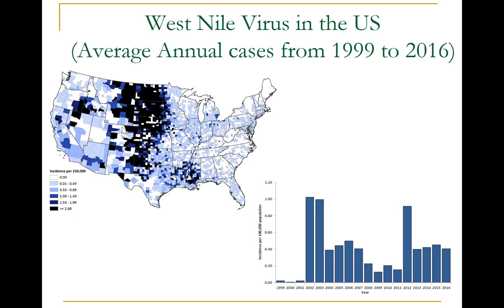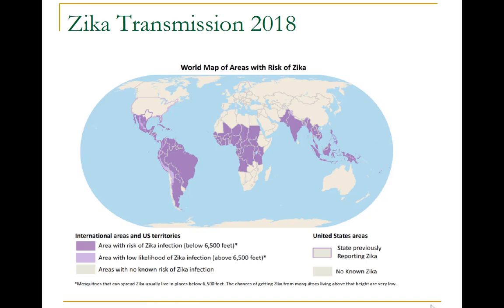West Nile virus in the U.S., as mentioned earlier, has been spreading since 1999 and through 2006. As you can see, cases have been spreading all over the United States across multiple states. After its introduction, within a few years it became a huge epidemic that has been lasting to the present.